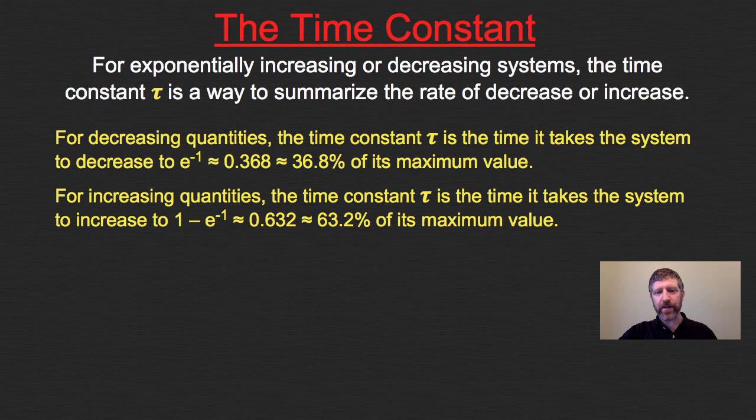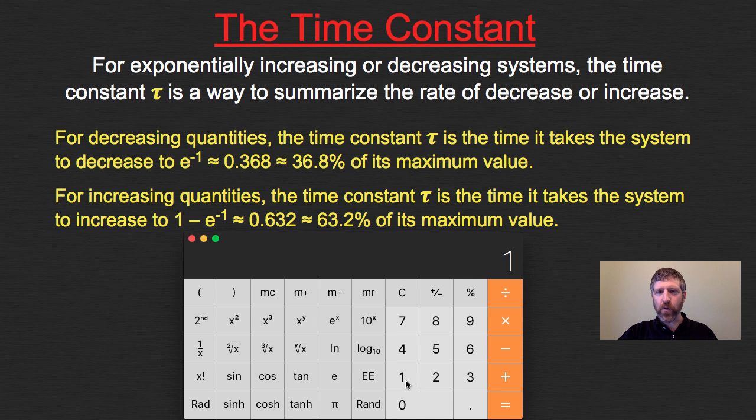Let me get out a calculator. Raise e to the negative 1. So here's 1, make it negative, and put e to that power. E to the negative 1 is 0.367879, which is about 36.8%. And if we did 1 minus that, 1 minus e^(-1), I get 63.2% approximately. So these percentages come from e^(-1).